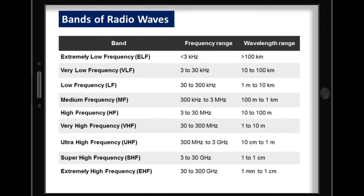The radio wave spectrum can be arranged into 9 bands: extremely low frequency, very low frequency, low frequency, medium frequency, high frequency, very high frequency, ultra high frequency, super high frequency, and extremely high frequency. Let's take a closer look at the different uses of these 9 bands of radio waves.